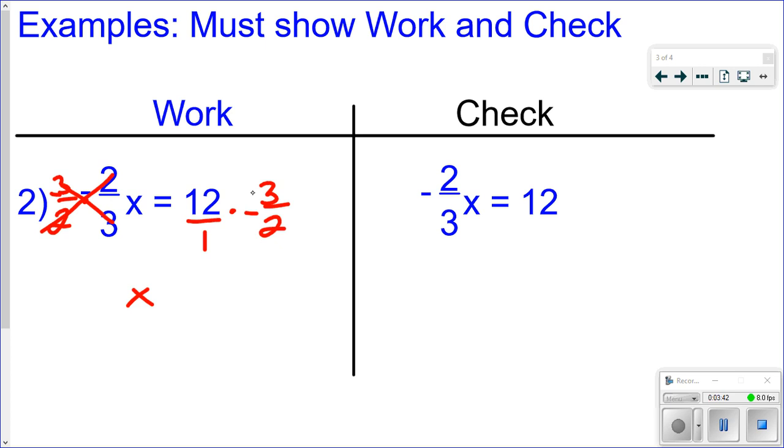Multiply straight across. Remember, you can cross-simplify when you're multiplying fractions. So I could simplify this to 1 and 6. Otherwise, I have to simplify at the end. But let's just go ahead and multiply straight across. This is a positive times a negative. So I'm going to get a negative answer. 12 times 3 is 36. And 1 times 2 is 2. And then 36 divided by 2 is 18. So I get x equals negative 18.